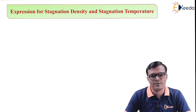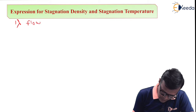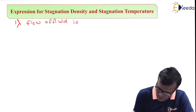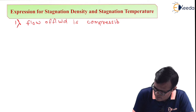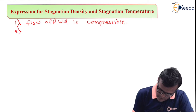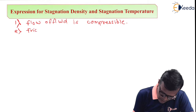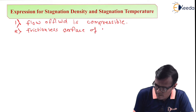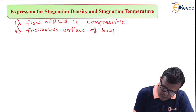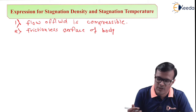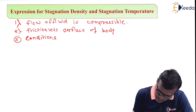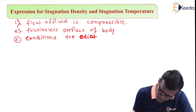But before that we are going to assume some data. The assumptions are: first, flow of fluid is compressible. Secondly, frictionless surface of body about which the flow is occurring. And the third assumption is that conditions are adiabatic.